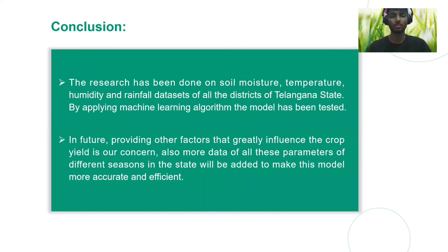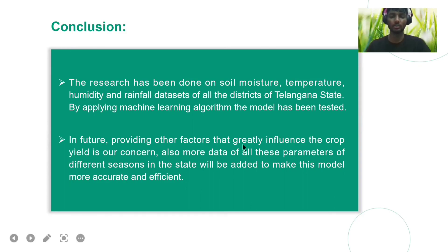The system uses soil moisture, temperature, and humidity datasets from districts across many states like Telangana and Andhra Pradesh. Using this machine learning model, it is set to support future crop production by providing other factors that greatly influence crop yield, in order to produce a large yield. This system is used to predict the yield before the crop is even cultivated. Thank you.